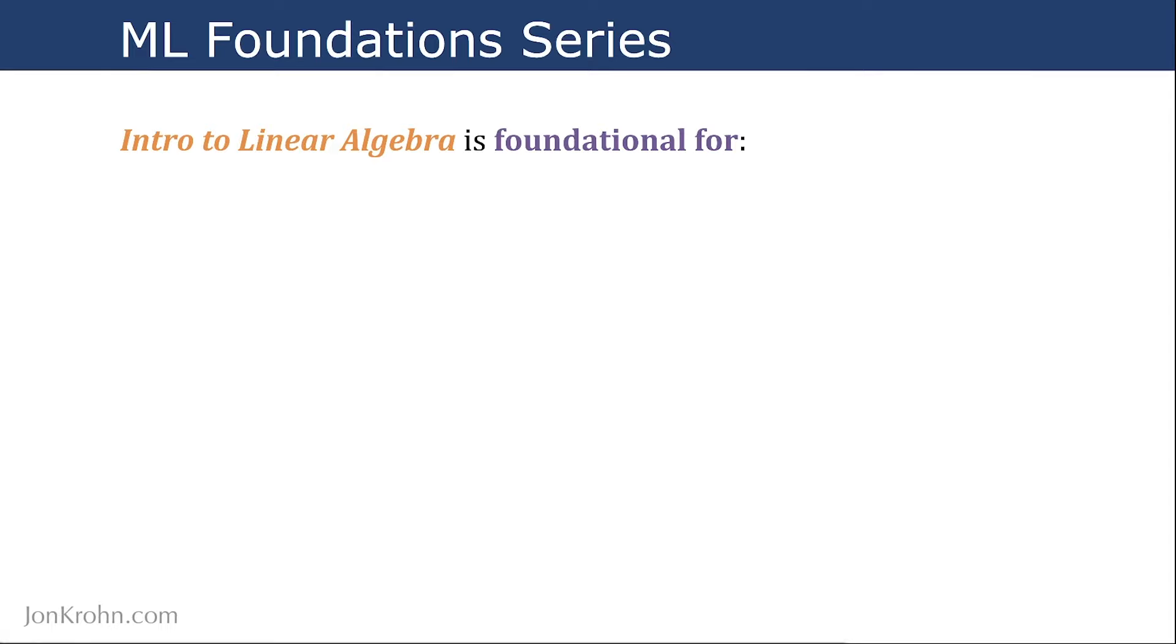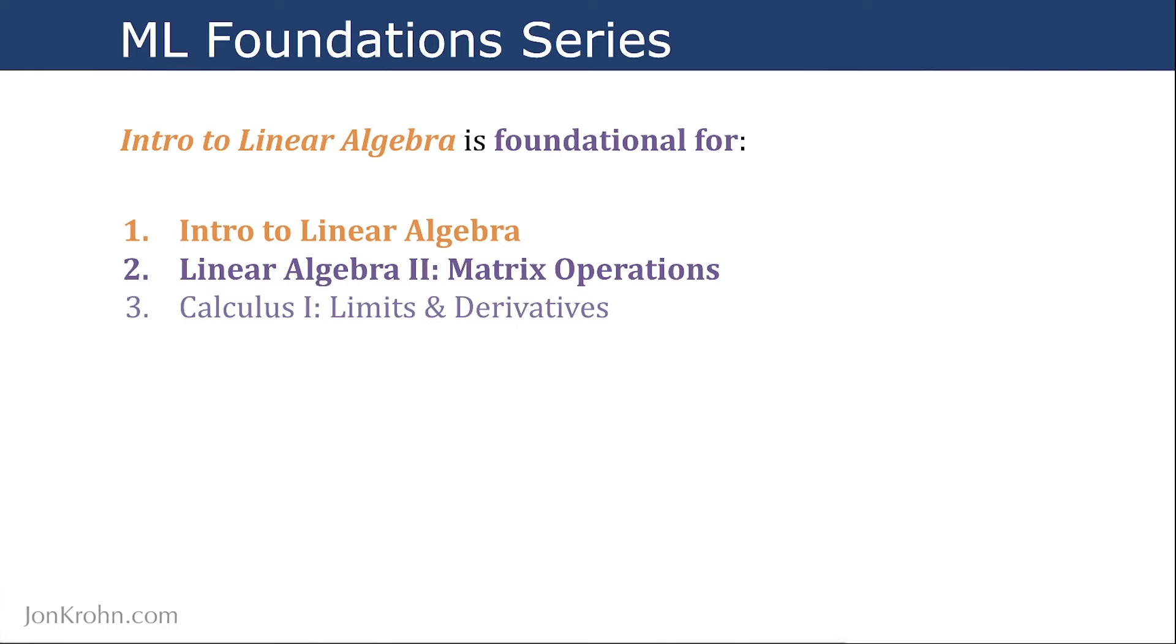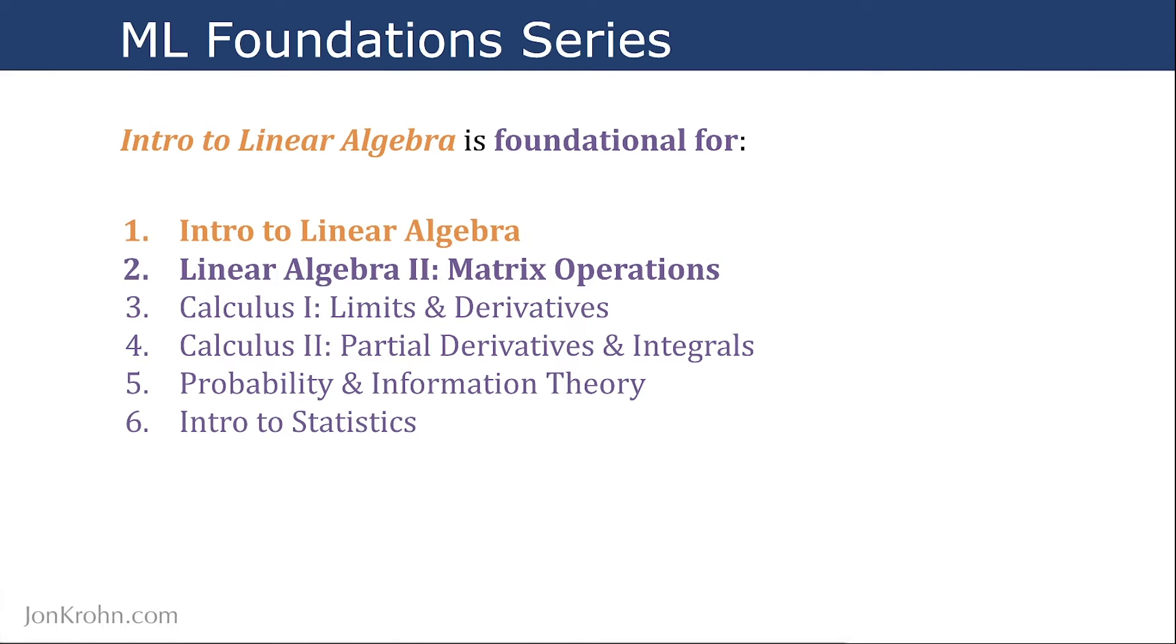So, in this Machine Learning Foundation series, this intro to linear algebra subject that we're covering right now is foundational for, of course, the Linear Algebra 2 matrix operations subject that is coming up that will cover eigenvectors in SVD and PCA. It also, I'm putting it in non-bold here, because it also is foundational for, though not as directly as it is for Linear Algebra 2, for our Calculus 1 limits and derivatives subject, as well as for Calculus 2 on partial derivatives and integrals. It's also foundational for probability and information theory and intro to statistics. The only one that it isn't really providing much for is the Algorithms and Data Structures class subject, which is subject 7. And it is very important, as basically all of these prior 7 are for the final optimization class that will tie everything together and show us in incredible detail exactly how modern machine learning algorithms optimize.